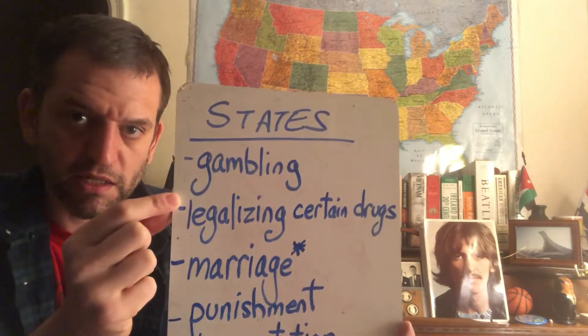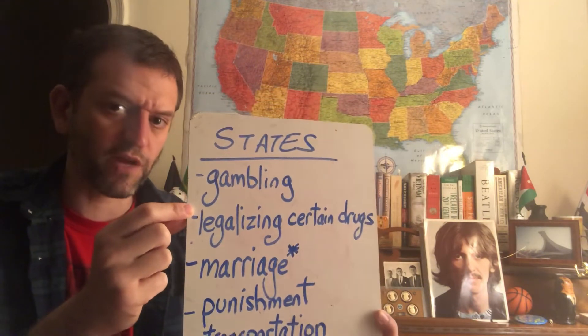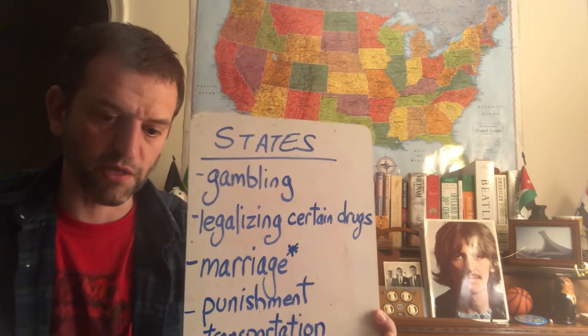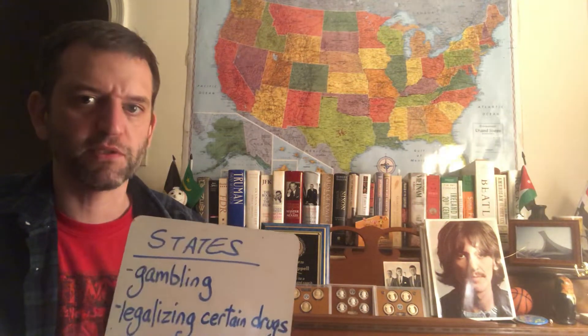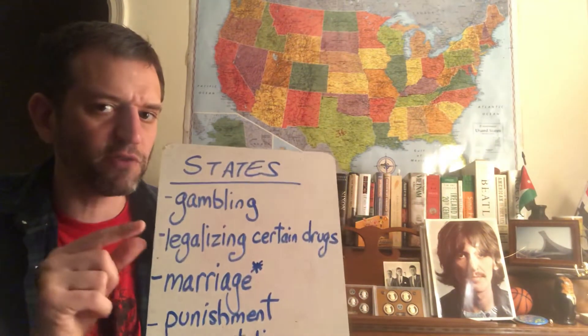Next is legalizing certain drugs. The federal government makes the laws that outlaw drugs they think are too dangerous. But something like marijuana is now up to the individual states to decide whether they want to make it legal or illegal, whether people can use it for medication purposes or not at all. That's up to individual states.